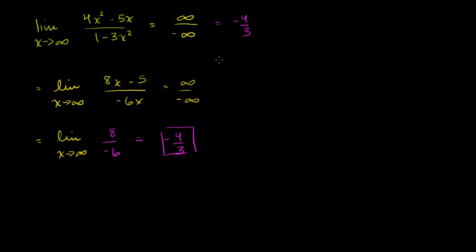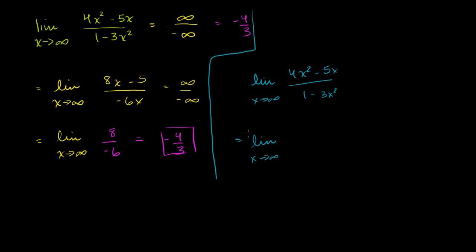For those of you who say we already knew how to do this — we could just factor out an x squared — you are absolutely right, and I'll show you that right here. L'Hôpital's rule isn't the only game in town, and frankly for this type of problem my first reaction probably wouldn't have been to use it. The limit as x approaches infinity of 4x squared minus 5x over 1 minus 3x squared: let's factor out x squared from the numerator and denominator. You get x squared times 4 minus 5 over x, divided by x squared times 1 over x squared minus 3.